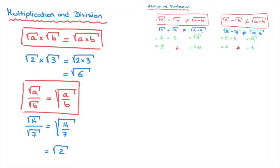We'll be looking into these rules a lot more in the next tutorials, and in particular we'll be using the multiplication and division formulas quite extensively. For now, make sure you keep in mind these four rules we've just seen and boxed in red — the four basic rules for addition, subtraction, multiplication, and division of two square roots. I really hope that helped, and if it did, please hit like on this video and subscribe to our channel.